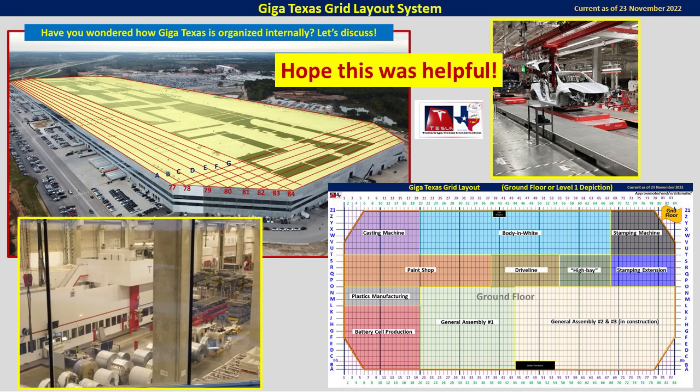I would like to thank many of my Patreons for their support and help in developing all of this information concerning the grid pattern and the floor layout. I couldn't have done it without all of your help. I do hope that you found this information, the illustrations and discussions, helpful and useful, and that it helps put into context what you're seeing with the continued construction of GigaTexas, and also as we turn more and more towards production. If you ever see any images from inside the factory and can see the columns with the markings, you can use this grid to identify exactly where it's located. Thank you very much for watching. I hope you have a great day.